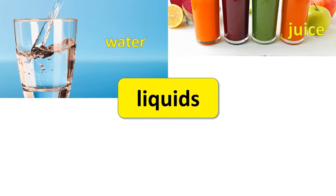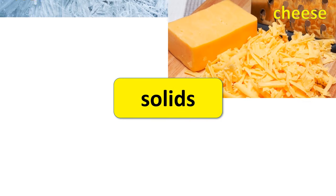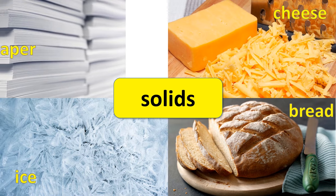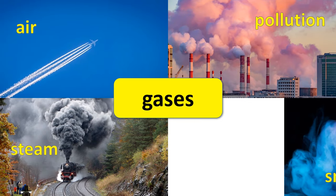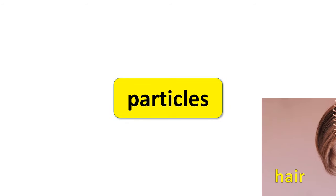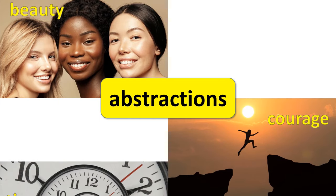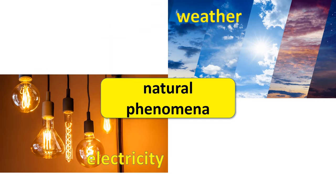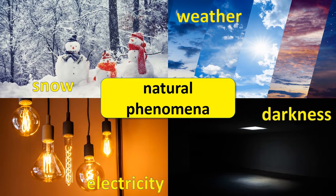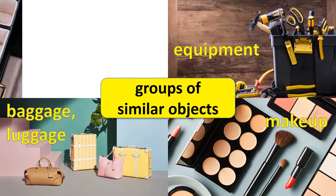Liquids: water, juice, blood, shampoo. Solids: cheese, ice, bread, paper. Gases: steam, pollution, air, smoke. Particles: air, dust, rice, salt. Abstractions: beauty, courage, time, music. Natural phenomena: weather, electricity, snow, darkness. Groups of similar objects: baggage, luggage, equipment, makeup, jewelry.